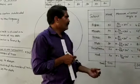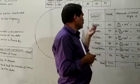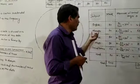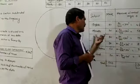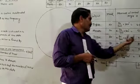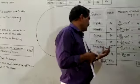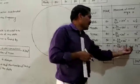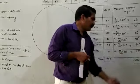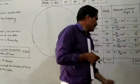So, the central angle of English is 45 degrees, Marathi is 63 degrees, Science is 72 degrees, Maths is 81 degrees, Social Studies is 54 degrees, and Hindi is 45 degrees. Total is 360 degrees.